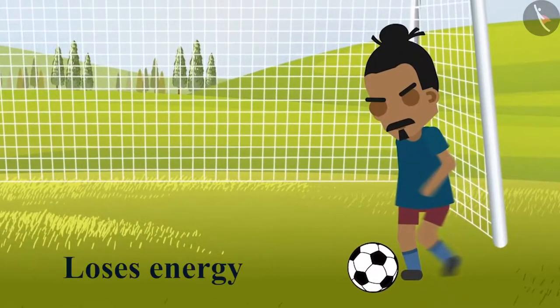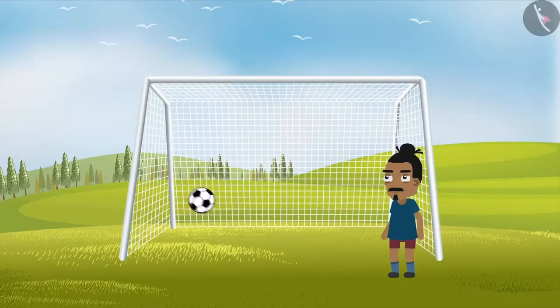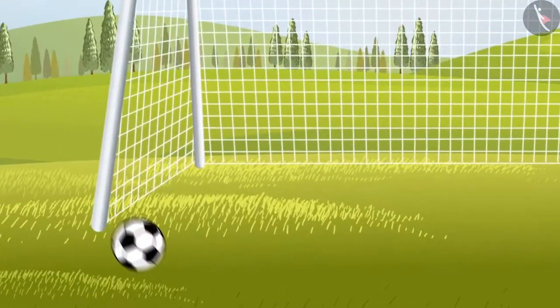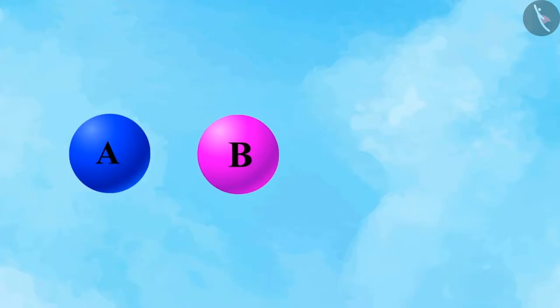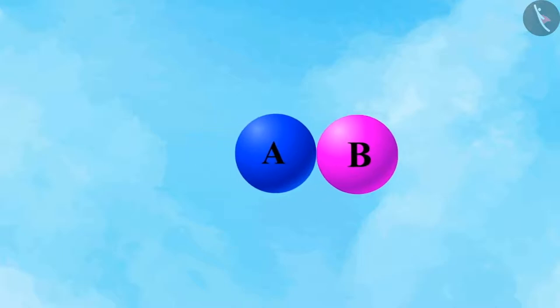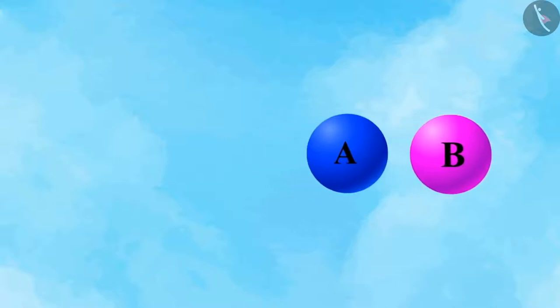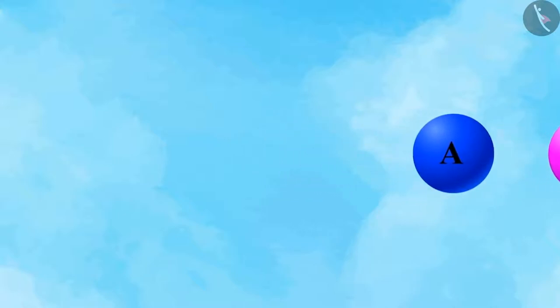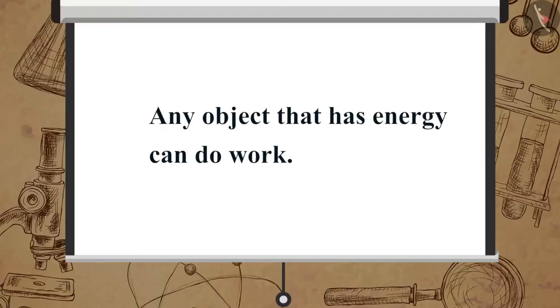The object which does the work loses energy whereas the object on which work is being done gains energy. Suppose a ball A exerts a force on another ball B. On doing this, ball A transfers its energy to ball B.